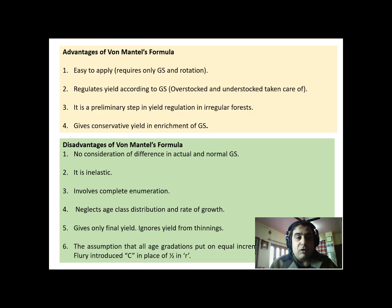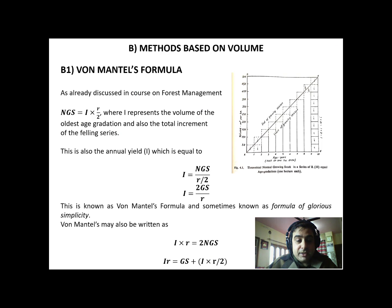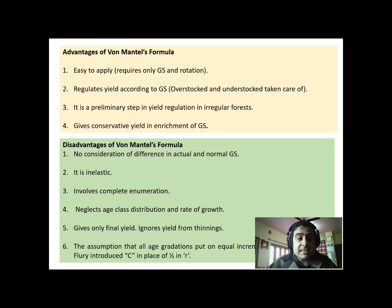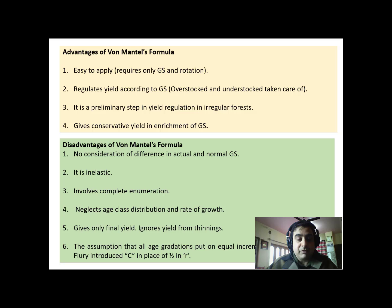What are the advantages of von Mantel's formula? First, it is easy to apply. As seen in the formula, the yield over the entire rotation equals twice the growing stock, so for estimating yield you only require the growing stock and the rotation of the species. Second, it regulates yield according to growing stock. Since yield is determined on the basis of growing stock, if a forest is overstocked you accordingly take a yield slightly higher than normal, and if it is understocked you naturally take a yield slightly lower than normal.